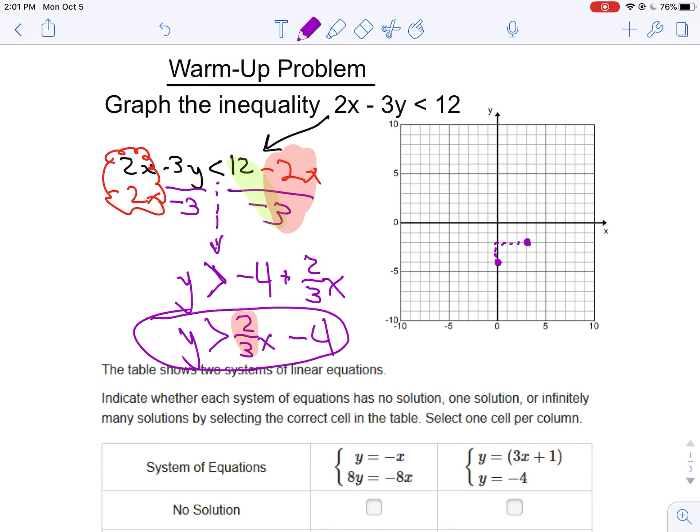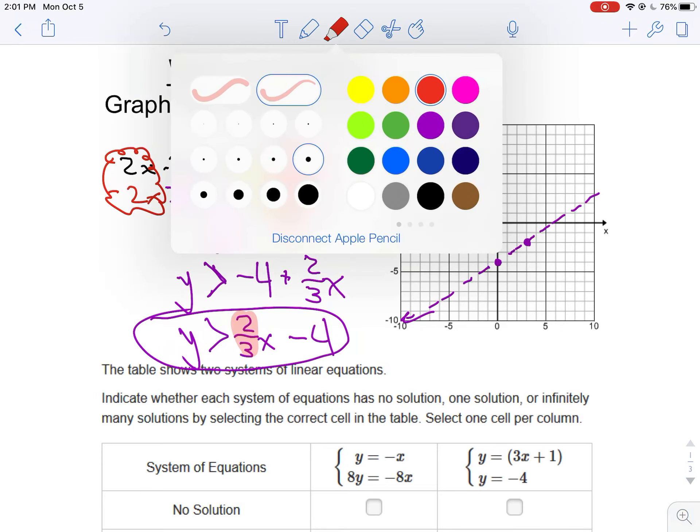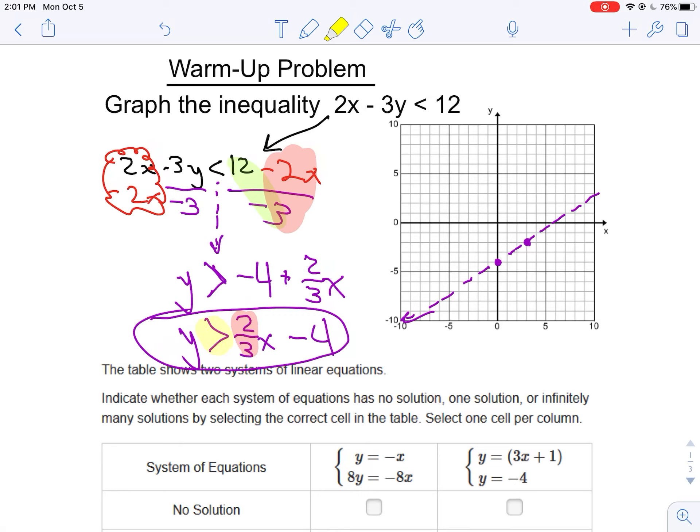So again, on the graph, I just go up 2 over 3. And now that I have that, I'm going to draw a line, but except I'm actually going to make it a dashed line. And I'm doing that because the symbol of inequality here that I'm dealing with says is greater than, not greater than or equal to. When it's greater than, or if it just says less than, it's a dotted line. It needs to be a boundary line.